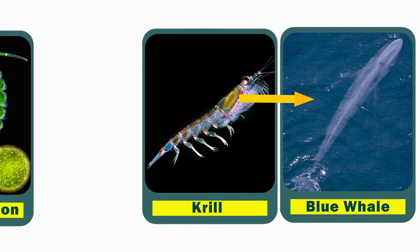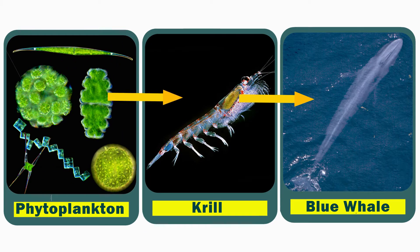A blue whale eats krill, and krill get their energy from the phytoplankton, and the phytoplankton get their energy from the sun. Now a food web shows that it's a lot more complex than this.